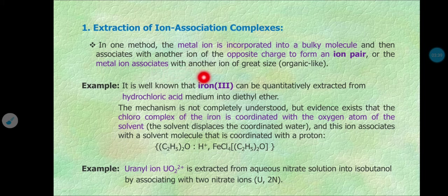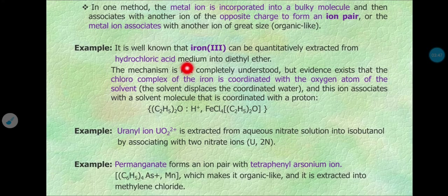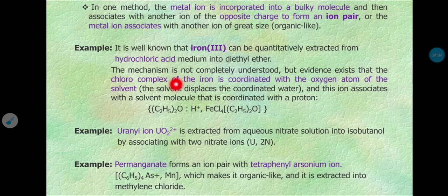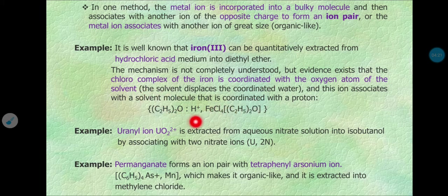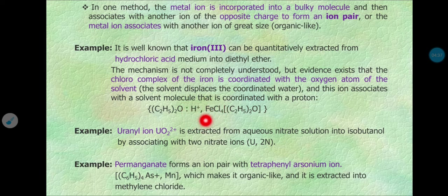The metal ion undergoes ion association with another ion of large organic-like size. For example, it is well known that iron(III), Fe³⁺, can be quantitatively extracted by adding hydrochloric acid medium and then extracting into diethyl ether. Evidence exists that the chloro complex of iron is coordinated with the oxygen atom of the solvent, forming the ion association complex [H⁺][FeCl₄⁻] with ether in the presence of acidic solution.